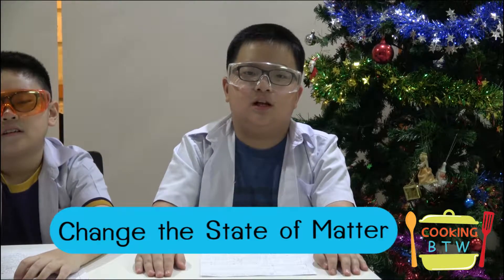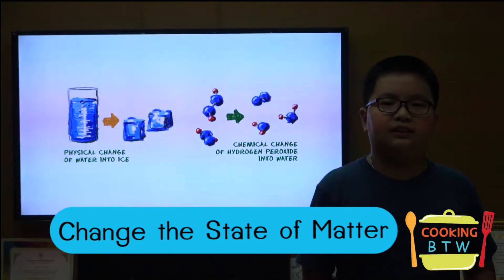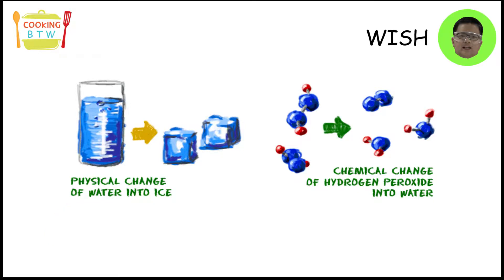While we are waiting for the chocolate milk to freeze, let's see how liquid changes to a solid state. When we take the heat from the liquid — like the chocolate milk in our experiment — it freezes into a cube. We can explain that particles of liquid slow down and group together, changing state from liquid to solid.